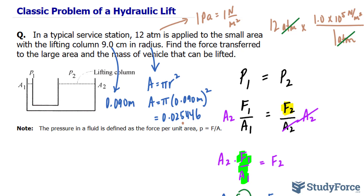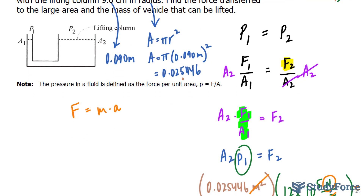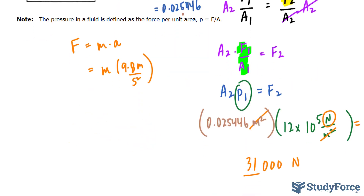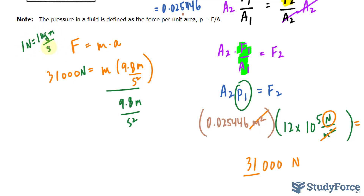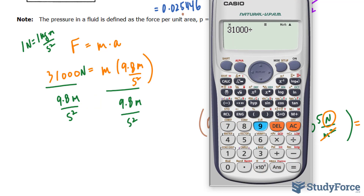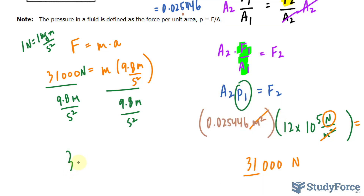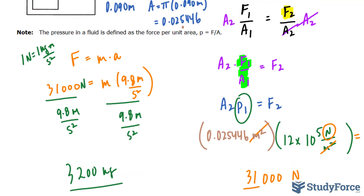We also need to find the mass of the vehicle that can be lifted. Remember that force equals mass times acceleration. Here, the acceleration is due to gravity, a constant of 9.8 meters per second squared. The force we found to be 31,000 newtons. Dividing both sides by 9.8 meters per second squared — where 1 newton equals 1 kilogram times meters per second squared — gives 31,000 divided by 9.8, which equals 3,163 kilograms. To the correct number of significant figures, that's 3,200 kilograms as the maximum weight this lift could support.